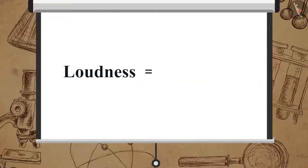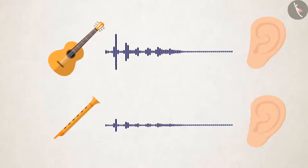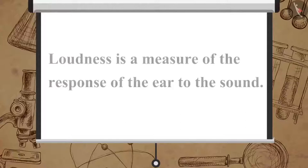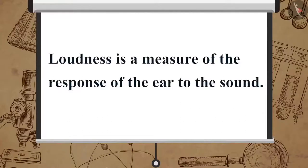Sometimes loudness is used in place of intensity, but science does not consider them the same. When we come across two sounds of the same intensity at the same time, we might find one sound louder than the other. It is simply because our ear detects one sound better than the other. Therefore, loudness is a measure of the response of the ear to the sound.